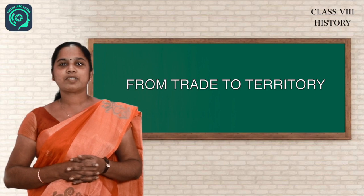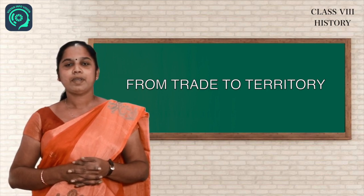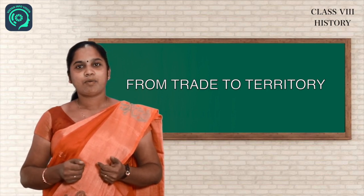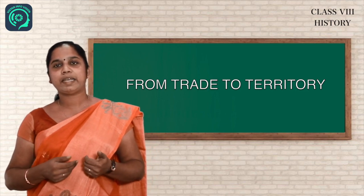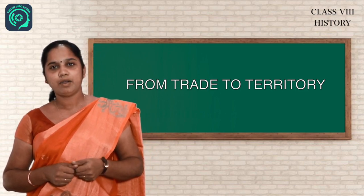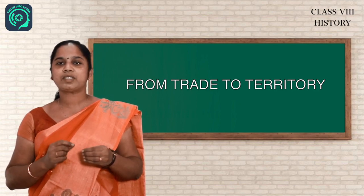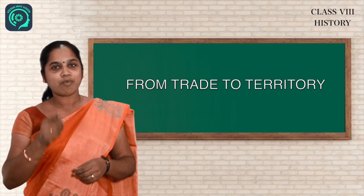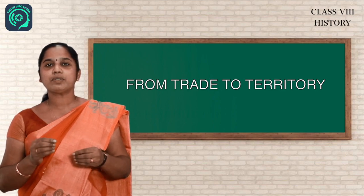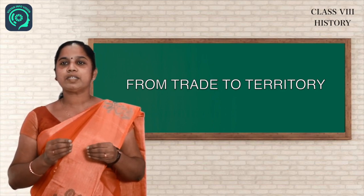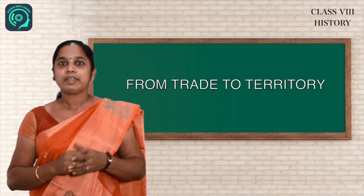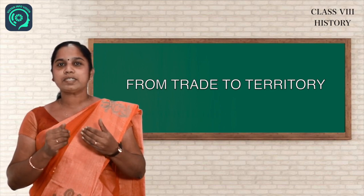My dear children, how did this English East India Company establish the trade in Bengal? What was the main reason that helped the company to establish their trade in Bengal? There is only one reason - that is the support given by Indian rulers to English East India Company. That means Indian rulers granted special rights to English East India Company for their trade.